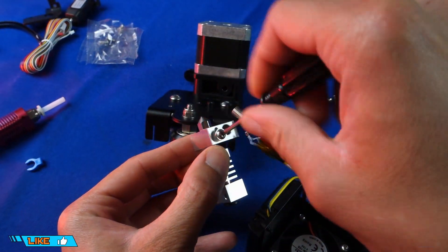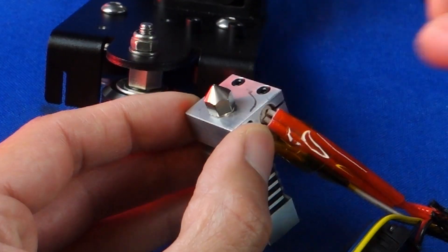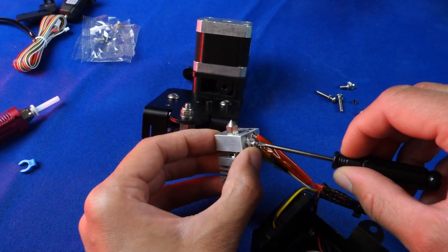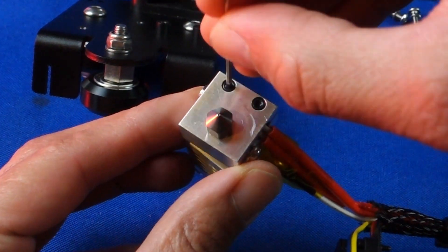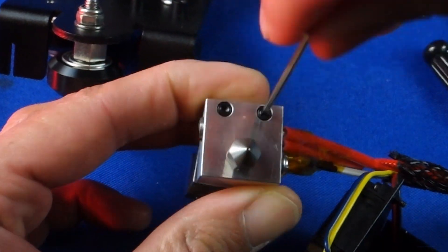We can now remove and attach the new hotend followed by the original thermistor and heater cartridge. One important difference with the heater cartridge is that there are two screws to help distribute the pressure and heat more evenly.